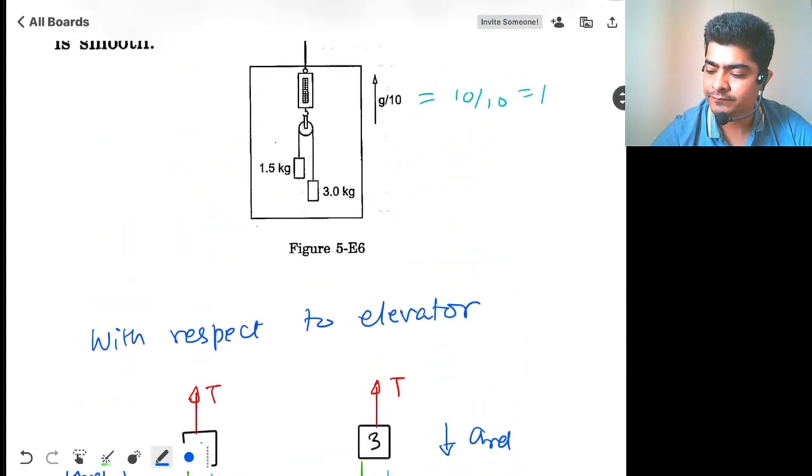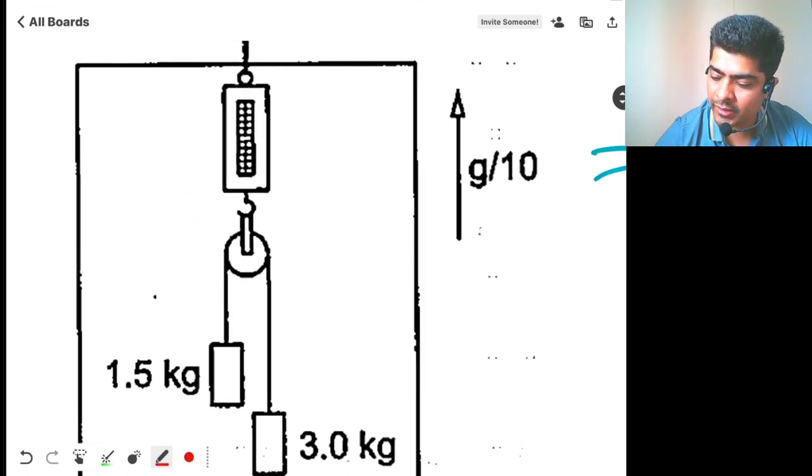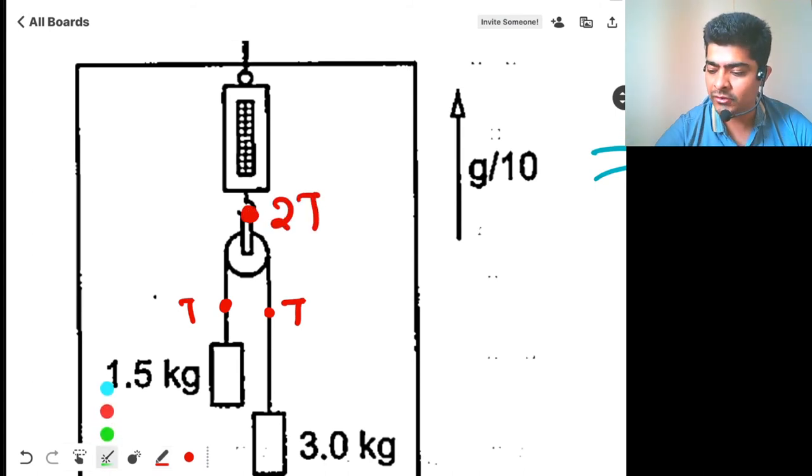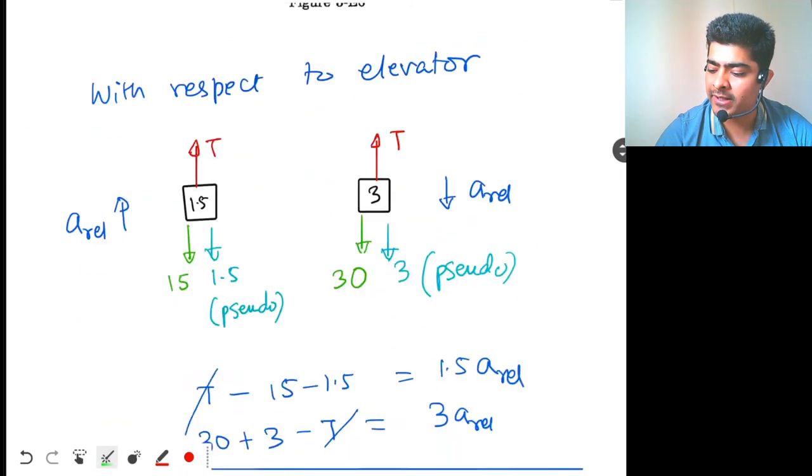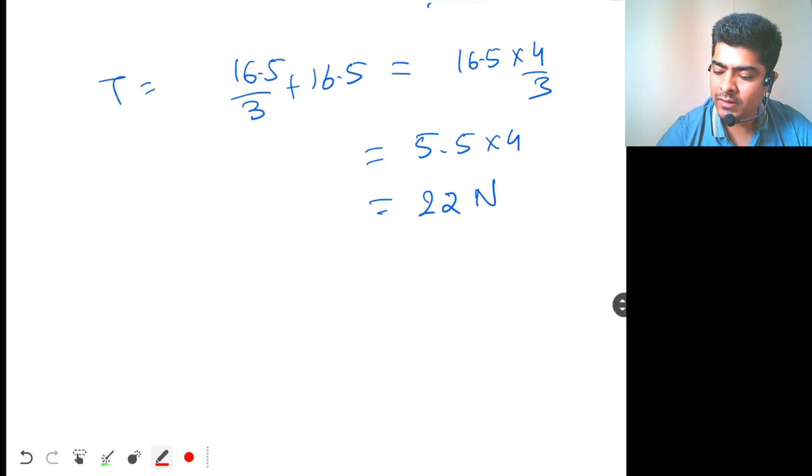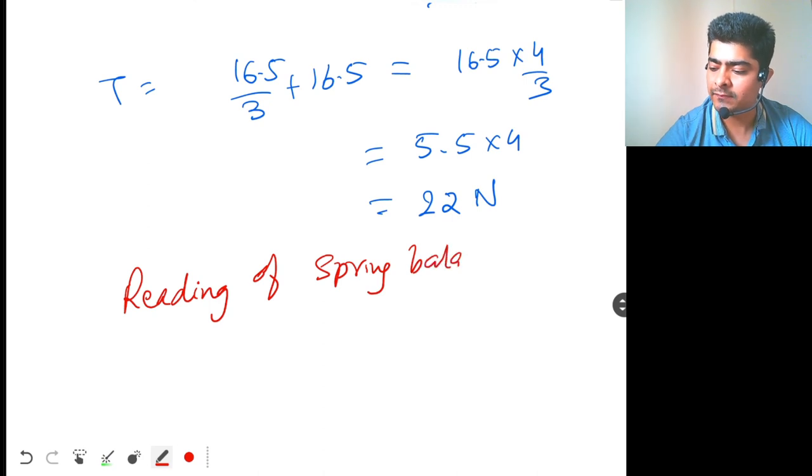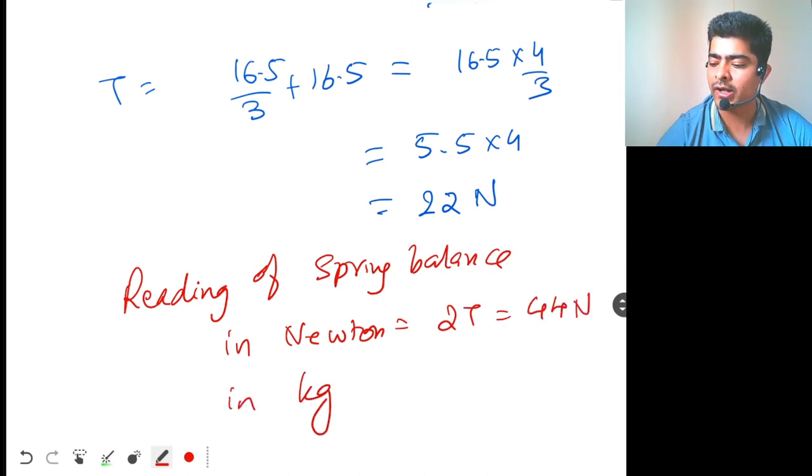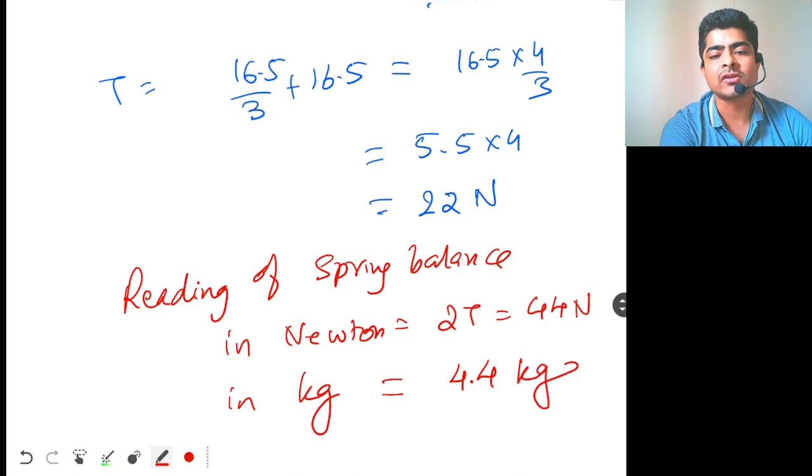Now. So, here we have tension T. Here we have tension T. So, here we will get tension 2T. So, the tension in the spring will be 2T. So, reading of spring balance will be what? Reading of spring balance in Newton will be what? That will be 2T. So, that will be 44 Newton. And in kilogram, it will be 44 by G. So, 44 by G, let's take 10. So, we get 4.4 kilogram. So, this is your answer.